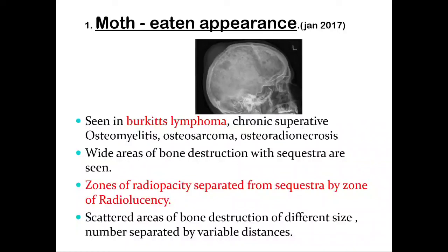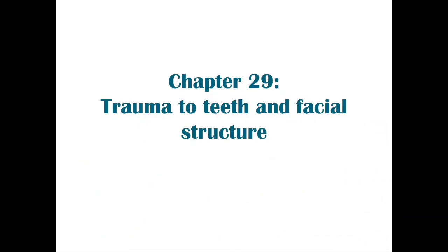A short note under this chapter is the moth-eaten appearance. You should describe in which clinical scenarios it is seen: Burkitt's lymphoma, chronic suppurative osteomyelitis, osteosarcoma, and osteoradionecrosis. It appears as wide areas of bone destruction with sequestration, where zones of radiopacity are separated from sequestration by zones of radiolucency, with scattered areas of bone destruction of different sizes separated by variable distances. This can be seen in the skull vault.